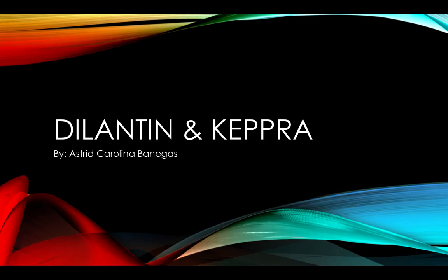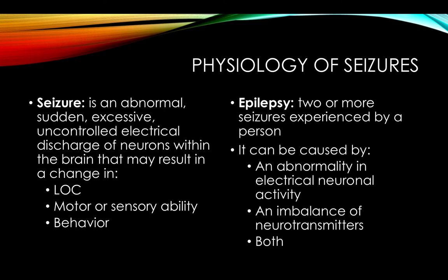Today we're going to talk about two antiepileptics: Dilantin and Keppra. The definition of seizure is an abnormal, sudden, excessive, uncontrolled electrical discharge of neurons within the brain that can cause a change in level of consciousness, motor, or sensory ability or behavior. Epilepsy is defined by the National Institute of Neurological Disorder and Stroke as two or more seizures experienced by a person, caused by an abnormality in electrical neuronal activity, an imbalance of neurotransmitters, or both.